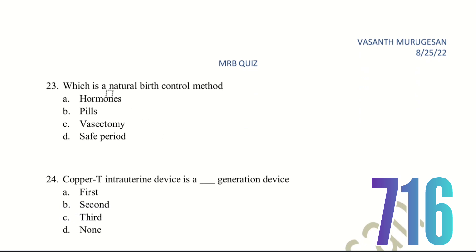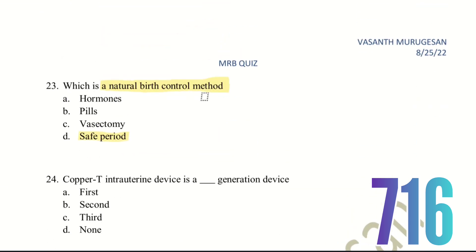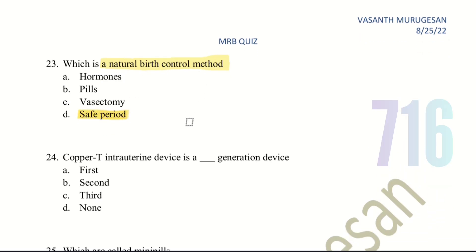Twenty-third question: which is the natural birth control method? The choices are hormones, pills, vasectomy, or safe period. Hormones and pills are pharmaceutical, vasectomy is surgical, but the safe period requires no drugs or devices. Therefore, safe period is the natural birth control method.